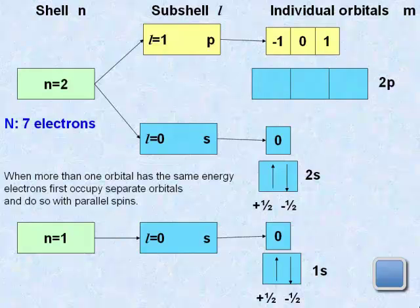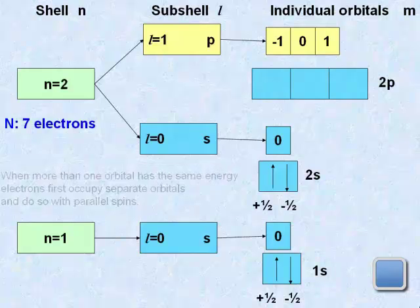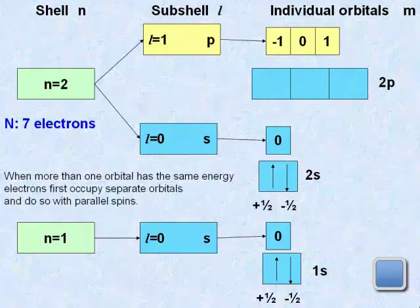And, according to Hund's rule, electrons first occupy separate orbitals, and do so with parallel spins.